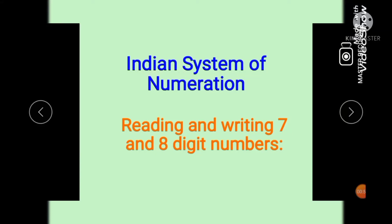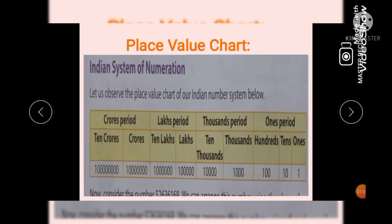Indian system of numeration. In this we are going to study reading and writing 7 and 8 digit numbers. First of all, we are going to study the place value chart in the Indian system of numeration. In the Indian system of numeration, there are four periods: one's period, thousands period, lakhs period, and crore period.